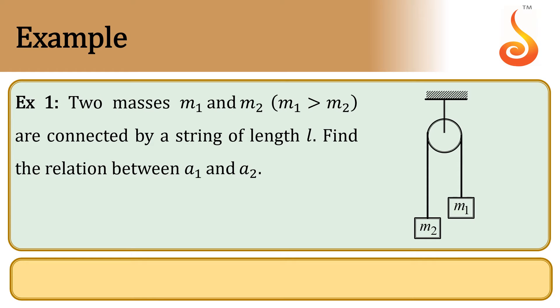Example 1. Two masses M1 and M2, where M1 is greater than M2, are connected by a string of length L. Find the relation between A1 and A2.